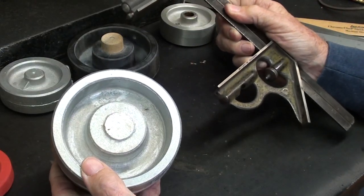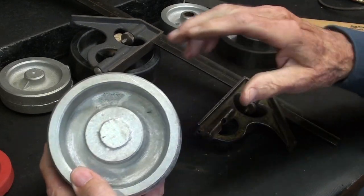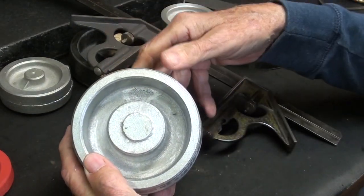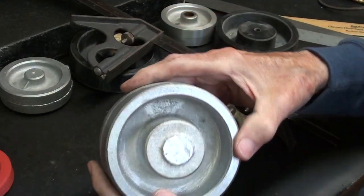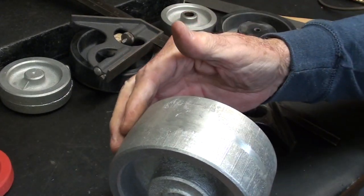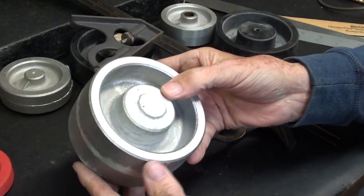Remember that when the pattern maker makes a pattern, he must also allow for machining. It's called a machining allowance, so that after this is cleaned up on the lathe, it will be the right size.